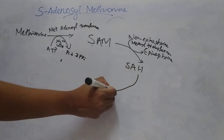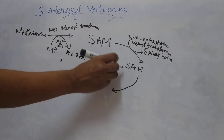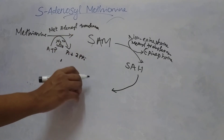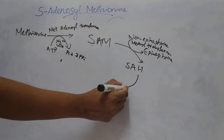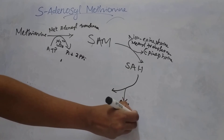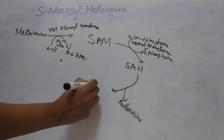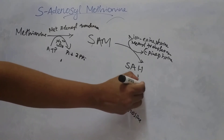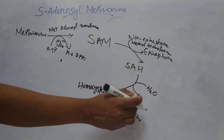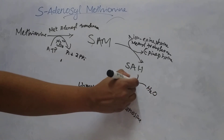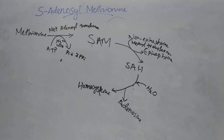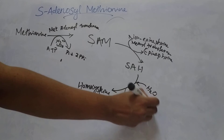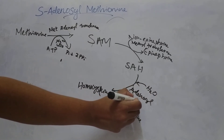The next step is hydrolysis of the sulfur-carbon bond of S-adenosyl homocysteine, forming homocysteine and adenosine. So adenosine is released and homocysteine is formed. One molecule of water is consumed and adenosyl is released. The enzyme is adenosyl homocysteinase.